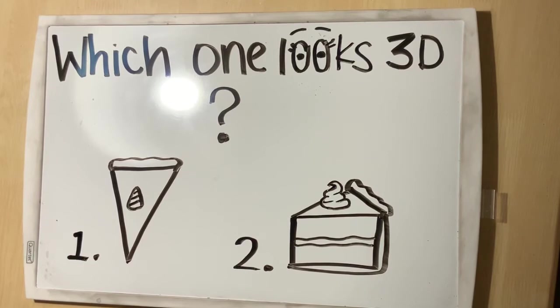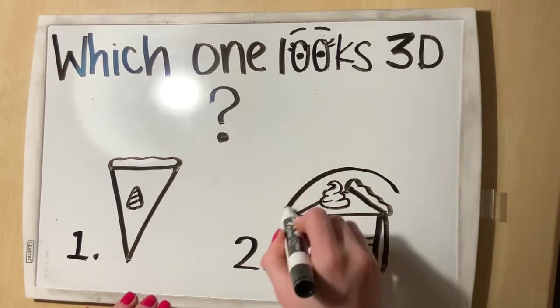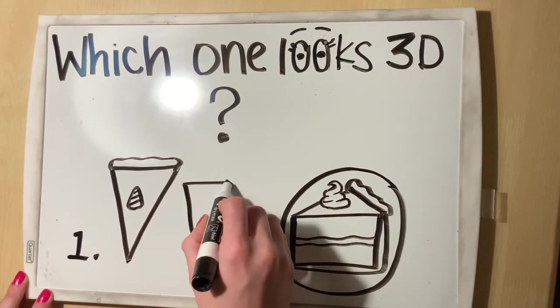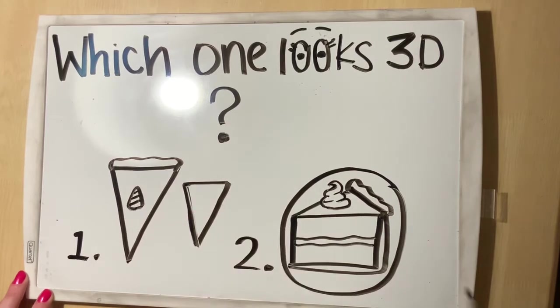Let's move on to the pie. Which one looks 3D? Number one or number two? To me, number two definitely looks more 3D than number one because number one is just a flat old triangle.